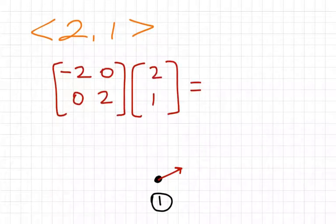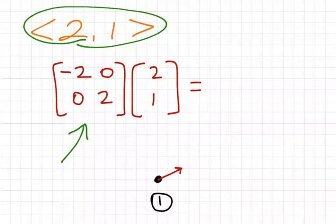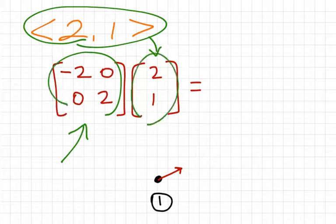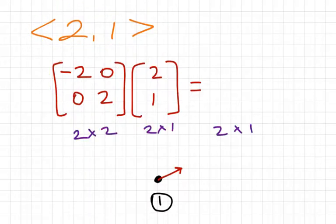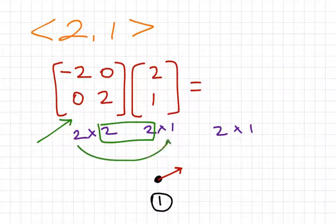On that paper, it says to transform the vector (2, -1) using the matrix (-2, 0, 0, 2). This is our transformation matrix, and we can write the vector as a matrix too. So we're doing a transformation matrix times a vector matrix, which gives us our transformation vector. To multiply matrices, the dimensions must be compatible — the transformation matrix is 2-by-2 and our vector matrix is 2-by-1. The inside dimensions match, so our answer will be a 2-by-1 matrix.